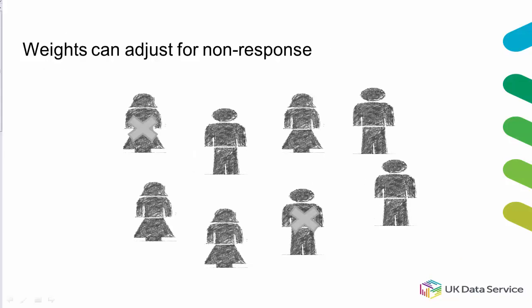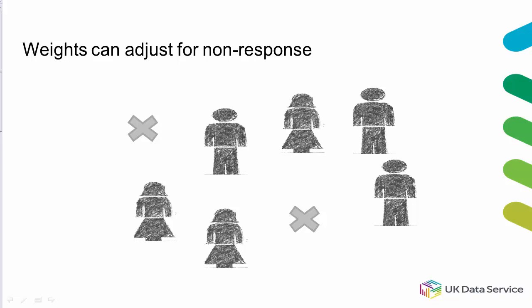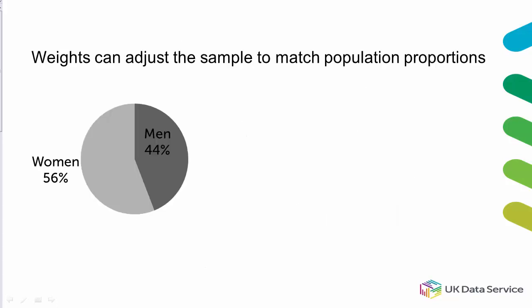Weights can also help compensate for survey non-response. Not everyone sampled will take part in a survey — some people cannot be contacted and others refuse. Response rates can vary systematically across groups. Non-response weights use information about response rates for subgroups to adjust data and limit potential bias.